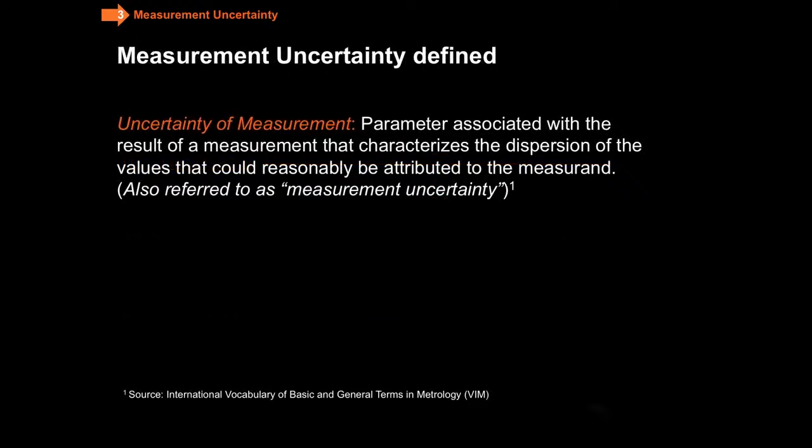Let's take a look at the formal definition of measurement uncertainty. It is formally defined as a parameter associated with the result of a measurement that characterizes the dispersion of the values that could reasonably be attributed to the measureand, that's metrology speak for the measurement.